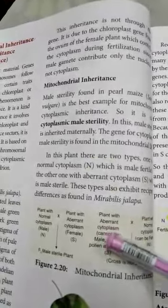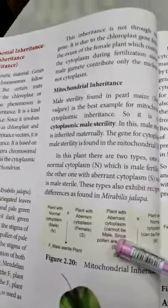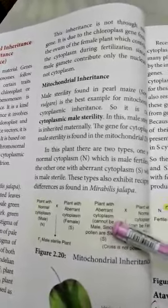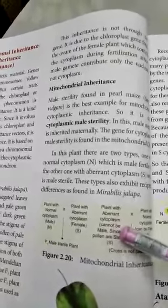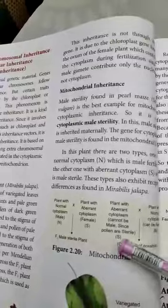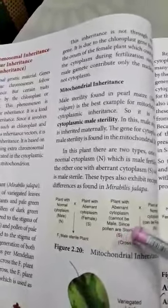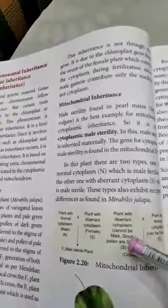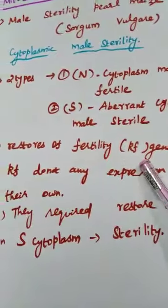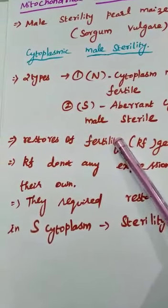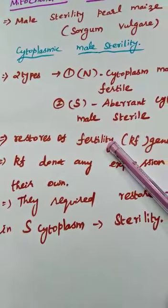This type of cytoplasmic genetic male sterility is now common in many plant species. The sterility is maintained by the influence of both nuclear and cytoplasmic genes. The two types of cytoplasm — normal and sterile — are found in the mitochondria of plant species like Sorghum vulgare, and are also responsible for the restorer-of-fertility genes, known as RF genes, which are responsible for the sterile characteristics of the cell.